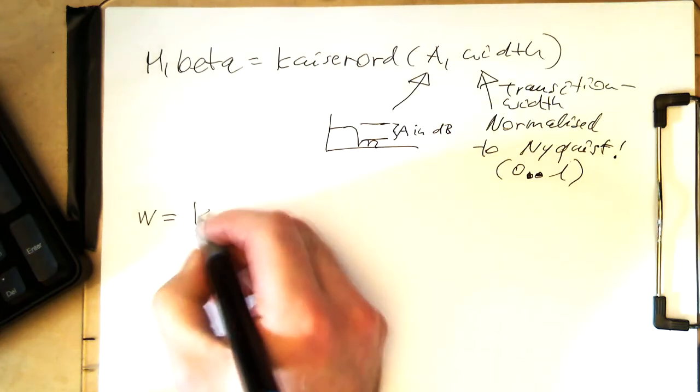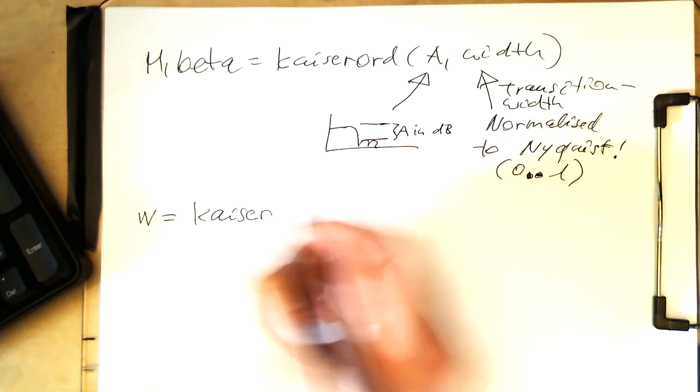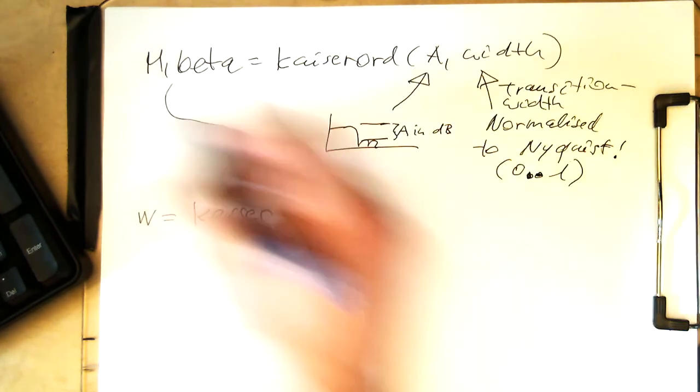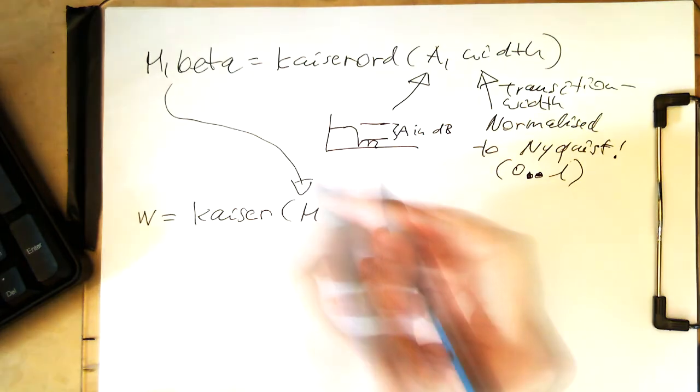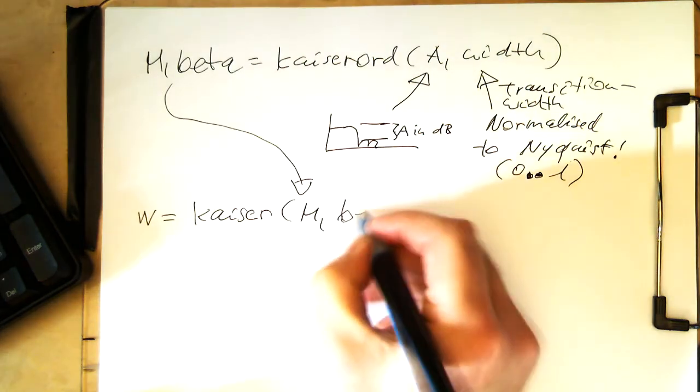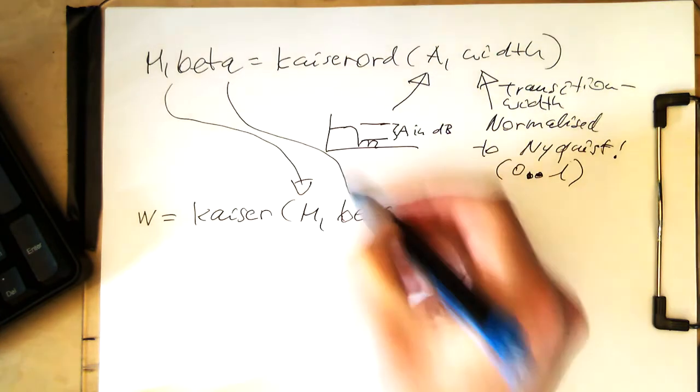So W Kaiser, and then M. So that goes in here, in our Kaiser window. And then the beta parameter also goes into that.